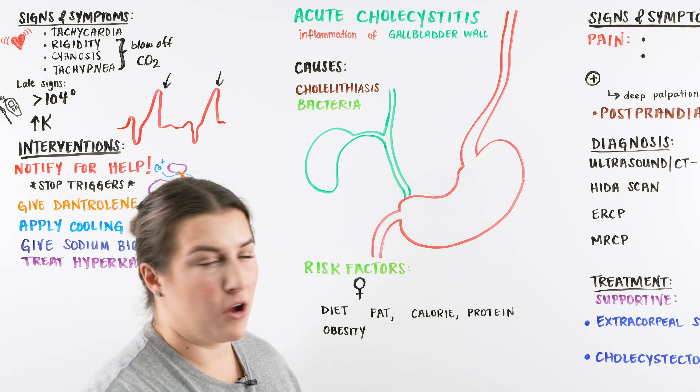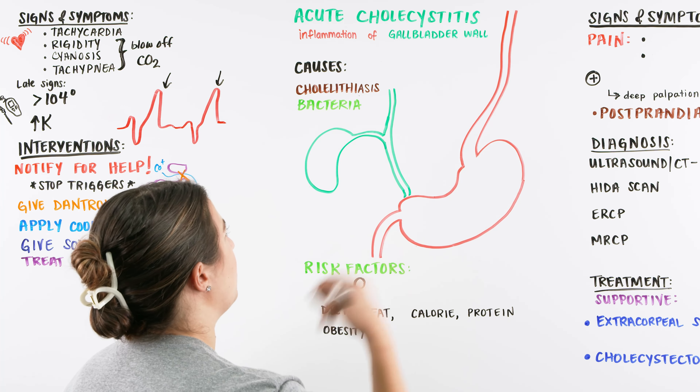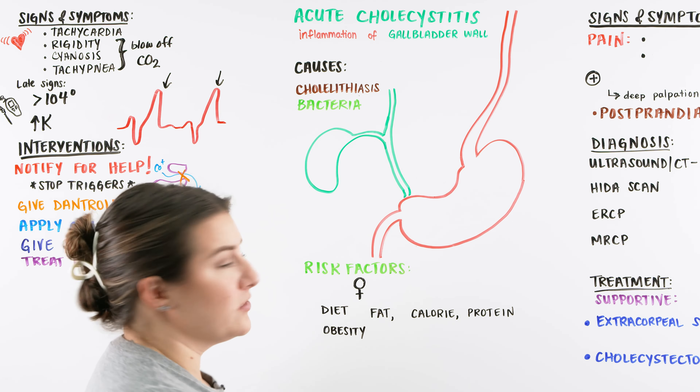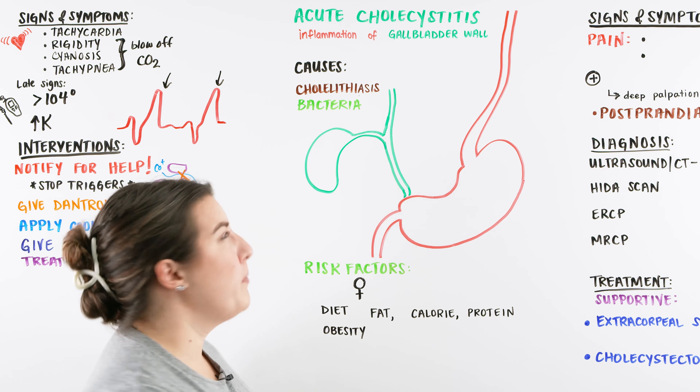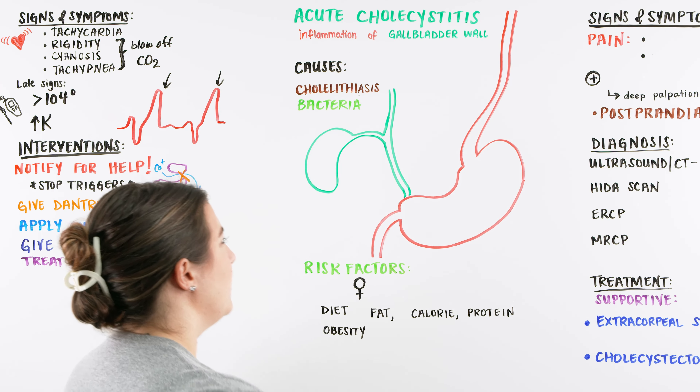Some causes of acute cholecystitis are going to be our cholelithiasis — these gallstones — or bacteria that can get into our gallbladder.